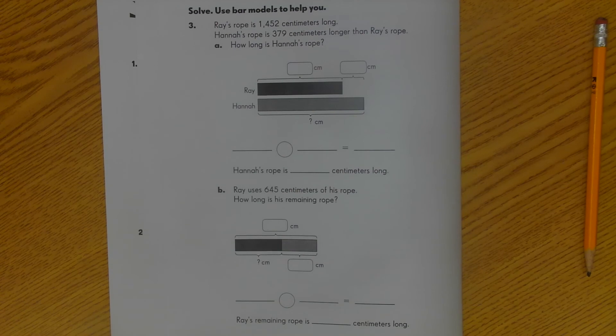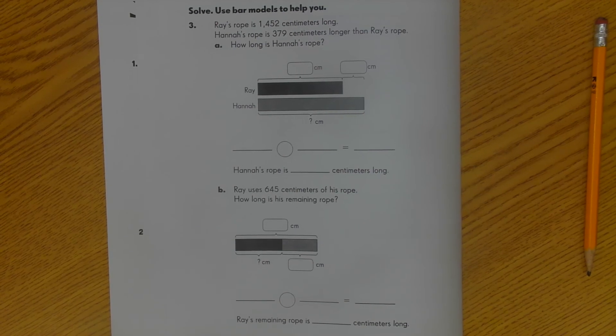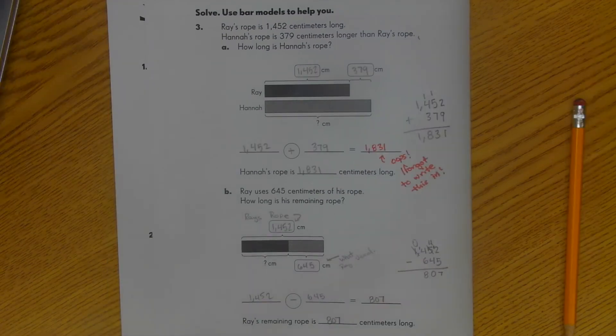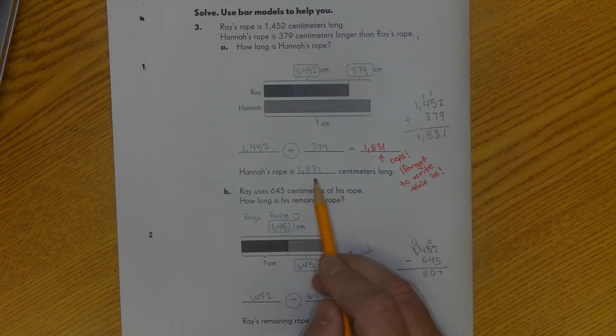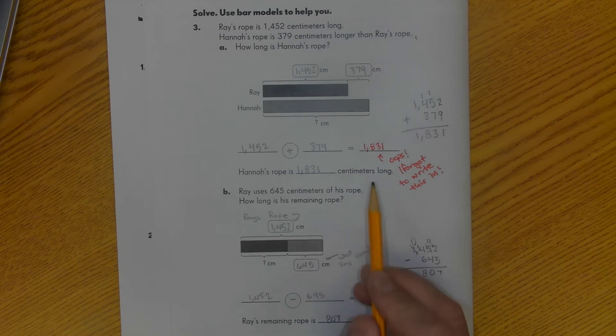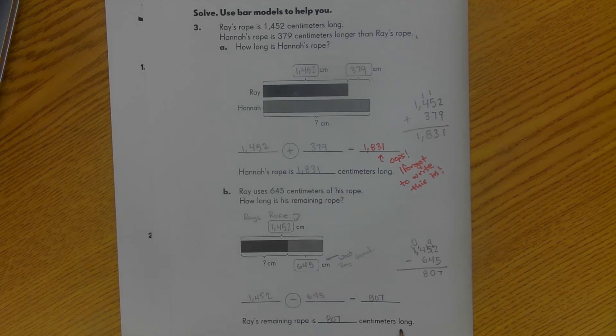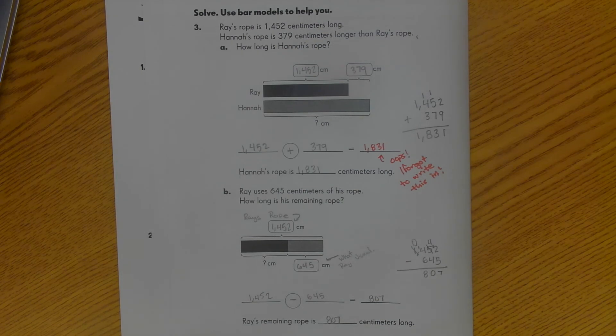So at this point, please go ahead and pause your video. Complete your work as best you can. And then just check it with mine. Okay, so I've gone back through and I've finished number three. And I will talk you through a little bit of my notes. But hopefully you can see the answers. What you should have ended up with is Hannah's rope is 1,831 centimeters long. And Ray's remaining rope is 807 centimeters long. So as long as you have that information, you are good to stop if you got everything correct. If you didn't get things correct, I'm going to ask you to keep watching so I can explain this to you and you can figure out where you might have gone wrong. So it's kind of like a choose your own adventure. You can be done with the video or you can keep watching if you miss them.